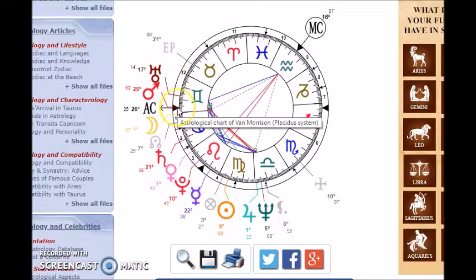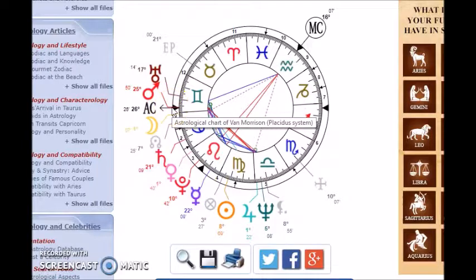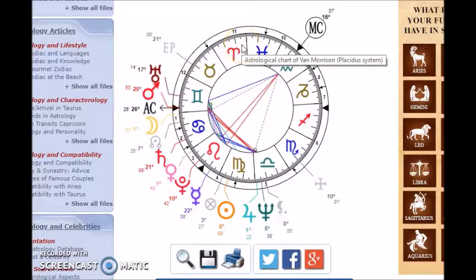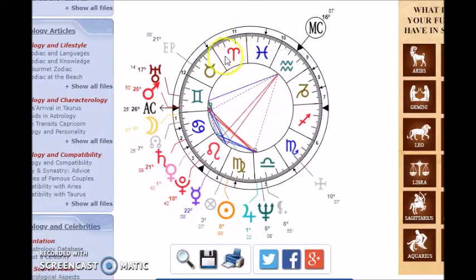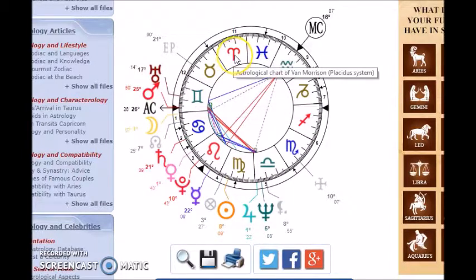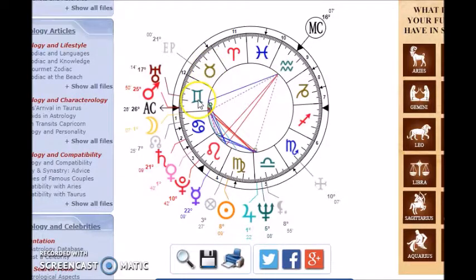Here we see he has Gemini rising, and Mars in conjunct with Gemini. Gemini is the sign of the twins, it's the first of the air signs in the Zodiac. Aries is Fire, Taurus is Earth, and the third sign is Gemini. Where Aries is I am, Taurus is I have, Gemini is I think. And it's the first sign of the mind, of communication.